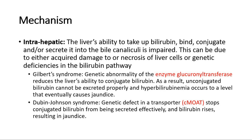Whereas in Dubin-Johnson syndrome, there is a genetic defect in a transporter CMOAT that stops conjugated bilirubin from being secreted effectively, and bilirubin rises, resulting in jaundice.